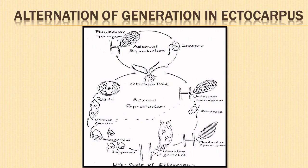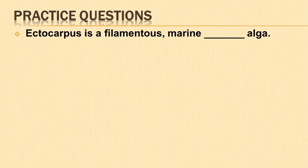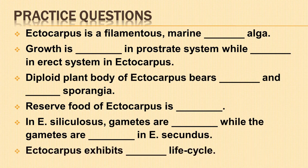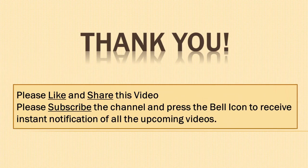Today we have learned in detail about the structure of the vegetative body of Ectocarpus, its cell structure, mode of reproduction — both asexual and sexual — and also isomorphic alternation of generation. I have some practice questions for you; please share your answers in the comment section below. You can pause the video and write down the questions if you like. Thank you so much for your time and participation. If you haven't subscribed to my channel yet, please consider subscribing and press the bell icon to get instant notification of all the upcoming videos.